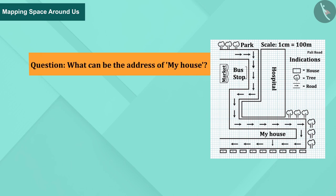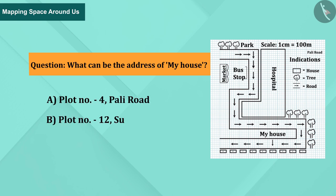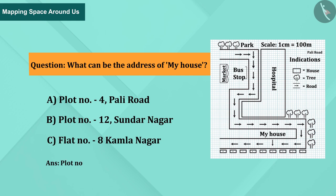Question: What can be the address of the house? A) Plot number 4, Bali Road, B) Plot number 12, Sundar Nagar, or C) Flat number 8, Kamala Nagar. Plot number 4, Bali Road is the address of the house.